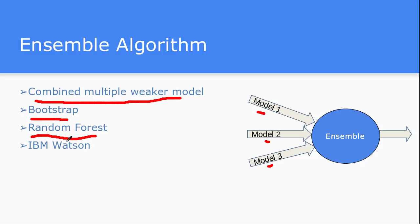One very good real-world example of an ensemble algorithm in an industrial system is IBM Watson, which is a question answering system. This system doesn't depend on a single algorithm. IBM Watson has been built around a huge set of different machine learning algorithms, and those outputs are given to an ensemble learning algorithm which decides which model's output to take or how much weightage to give each model in order to determine the actual output. That's it for ensemble algorithms.